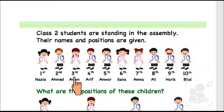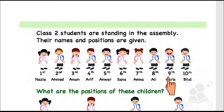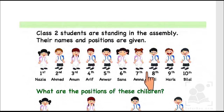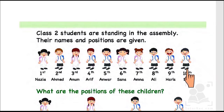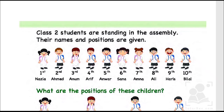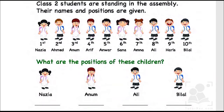Their names are Nazia, Ahmad, Anam, Arif, Anwar, Sana, Amna, Ali, Haris, and Bilal. Their positions are first, second, third, fourth, fifth, sixth, seventh, eighth, ninth, and tenth. A number has been given to each position to find out where each student is standing.